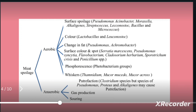Other species like Achromobacter change the fat composition of the meat. Additionally, surface color changes or spots can be caused by Serratia, Pseudomonas, Flavobacterium, and Penicillium species, among others.